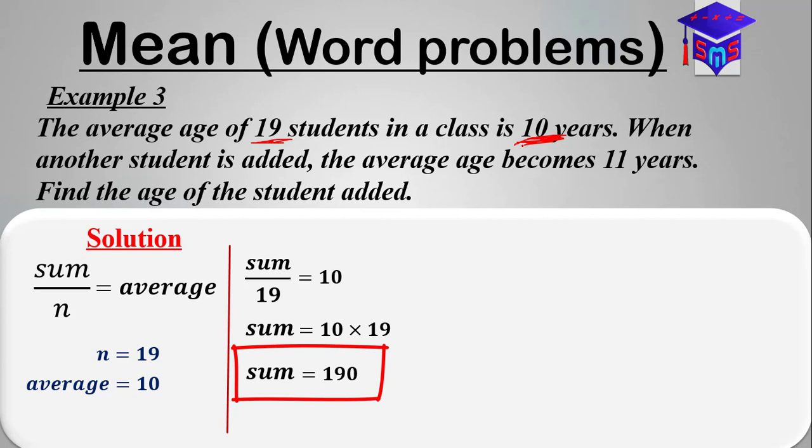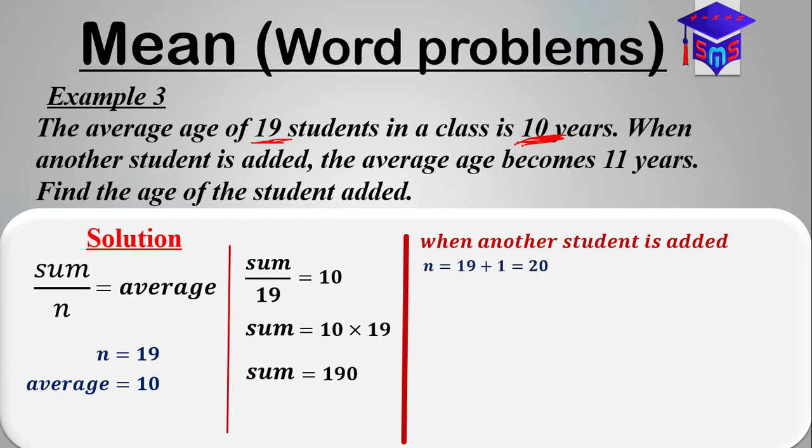What it means is that the 19 students in a class, when you sum their ages, it will be 190. So now when another student is added, you'd agree with me that the number of students would increase from 19 to 20, and we were told in the question that when another student is added, the average age is 11 years.